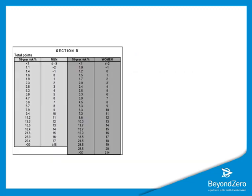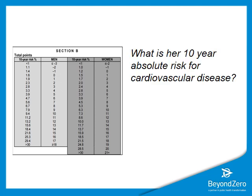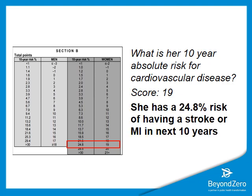Now, what do you do with this score? There's a second table you use to determine her particular risk — specifically her 10-year risk of cardiovascular disease, meaning the chances that in the next 10 years she will have a myocardial infarction or a stroke. She scores 19, which gives her a total risk of 24.8%. So she has a 24.8% risk of stroke or MI in the next 10 years — in medical terms, that is considered high risk. It might seem reassuring that there's a 75% chance she'll be fine, but if you have 100 patients with this profile, 25 of them will have an event within the next 10 years.